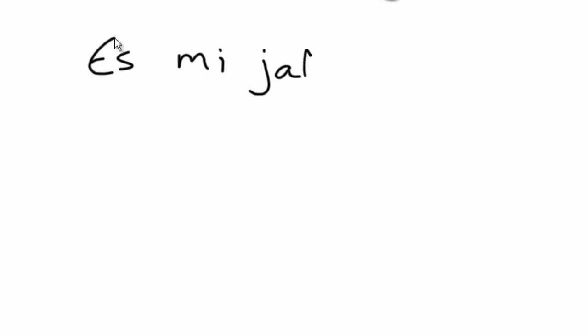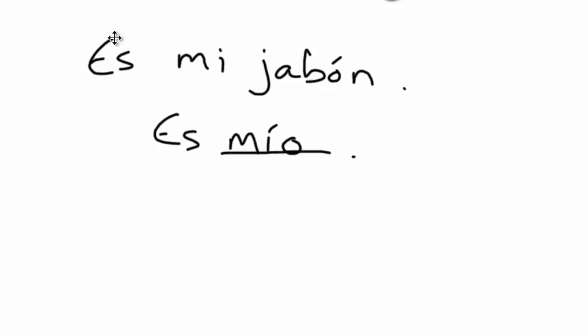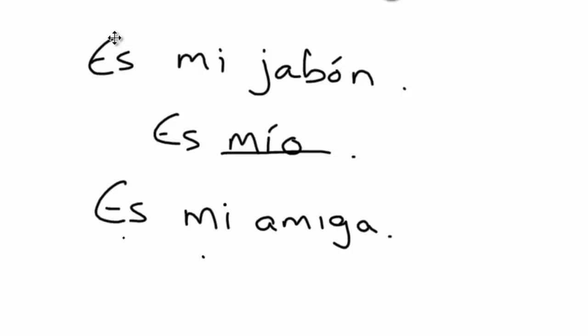So that's our quick overview. Let's do a little practice. If I have es mi jabón — how do I say it is mine? It is mine would be es mío. If I want to say she is my friend — es mi amiga. She is my friend, and I want to say whose friend is she? She's mine — es mía.